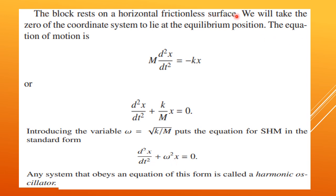The block rests on a horizontal frictionless surface. The equation of motion is F = -k(x - x0). Taking the x0 position as 0, so x0 = 0, the equation becomes M(d²x/dt²) = -kx. Rearranging: d²x/dt² + (k/M)x = 0. Introducing the variable ω = √(k/M), we get the standard form: d²x/dt² + ω²x = 0. This is the equation for simple harmonic motion.